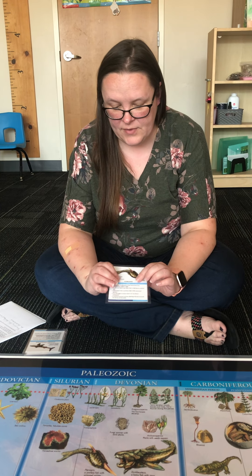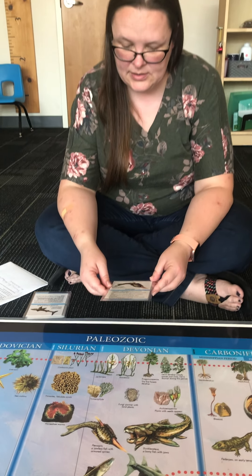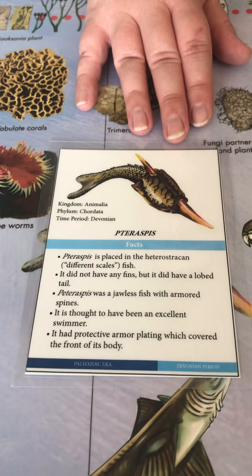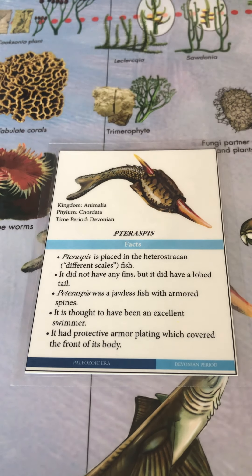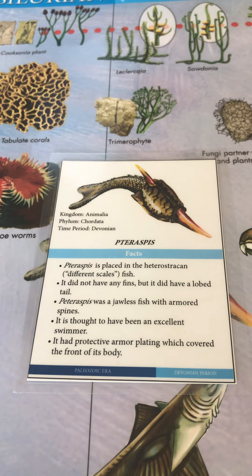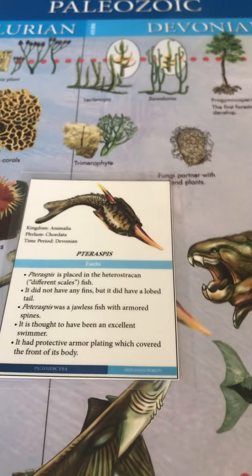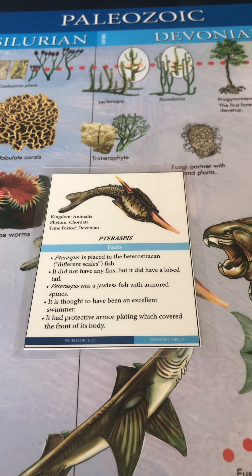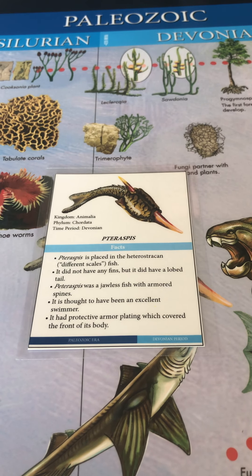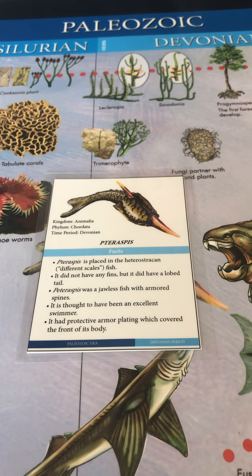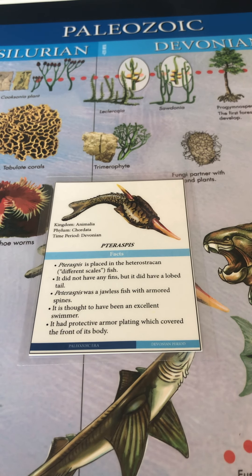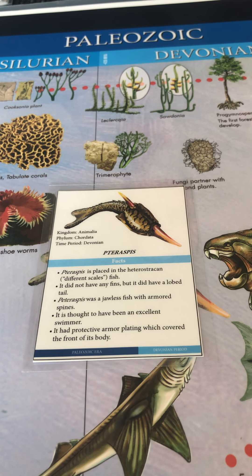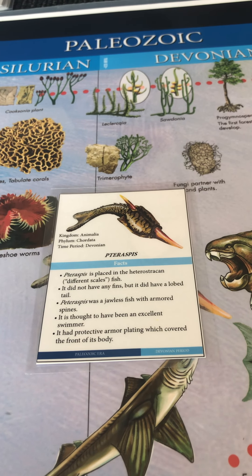One example of this is the pteraspis — so that's this guy here. The pteraspis were fairly slow, bottom-dwelling fish. They were covered with plates of heavy calcareous armor, as you can kind of see here. Their mouth was a round sucker near the bottom of the head end.